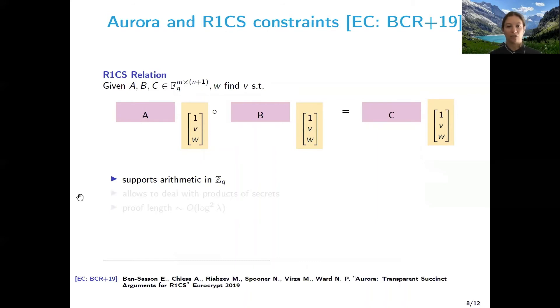In this work, we actually decided to change the kind of proof we're using and resolved to use Aurora. Aurora is a SNARK that was published at Eurocrypt in 2019 by Ben-Sasson et al. and allows to prove knowledge of the solution of an R1CS relation, which is the one represented here. So you're given matrices A, B and C, which have coefficients in FQ, and a public W, which is a vector, a column vector. And then the secret is the vector V. And V is such that A times (1,V,W) multiplied component-wise with B times (1,V,W) is equal to C times (1,V,W).